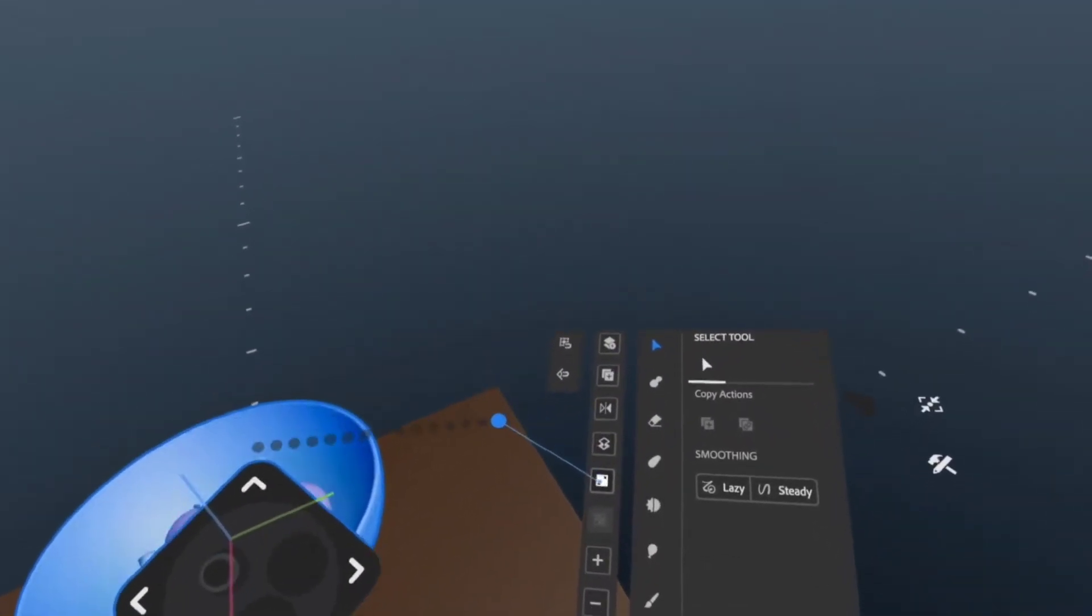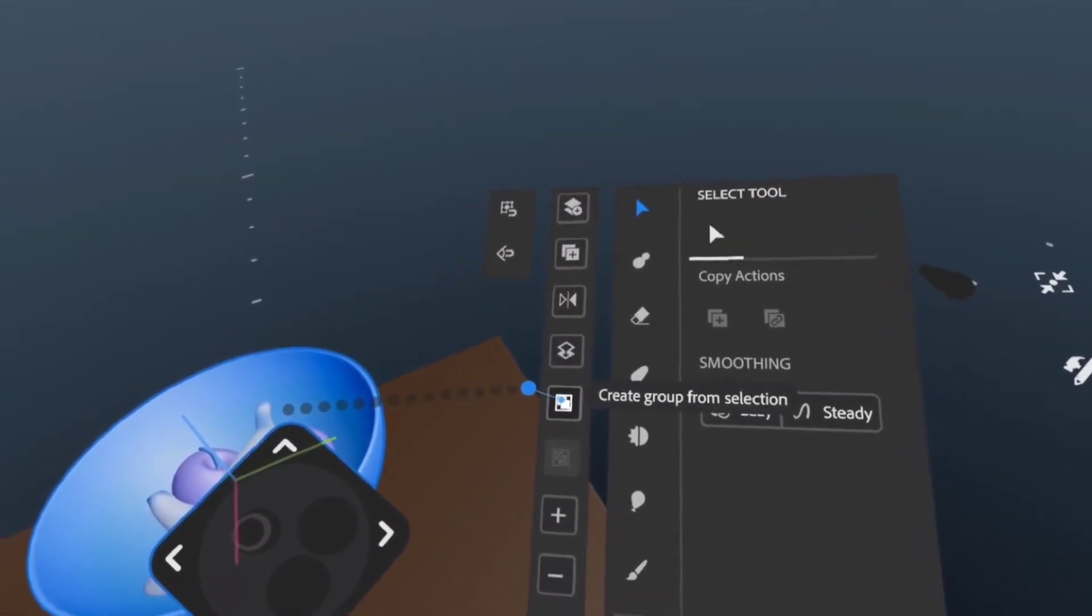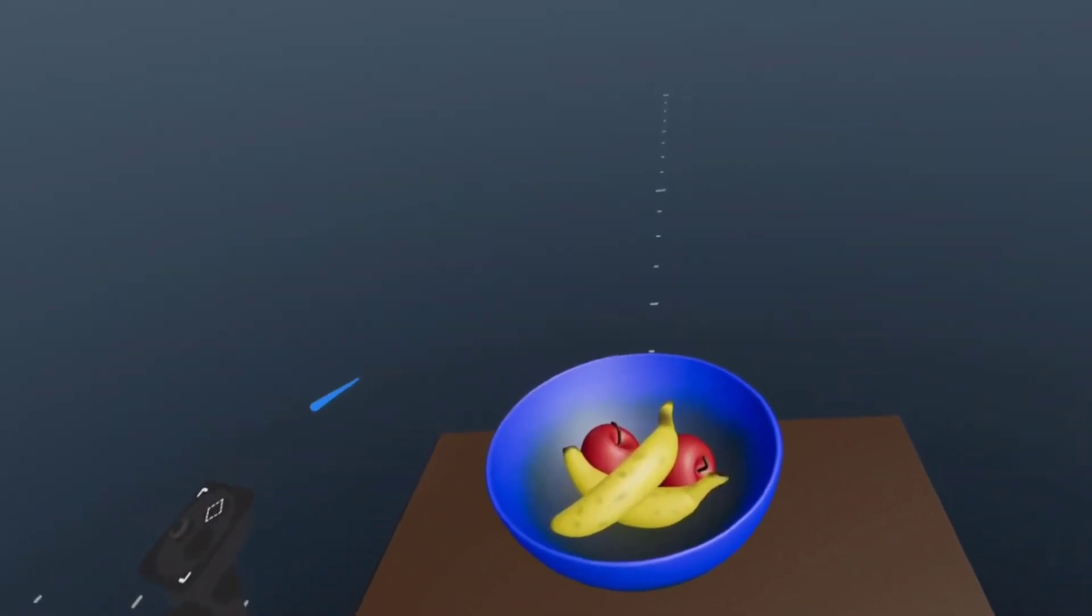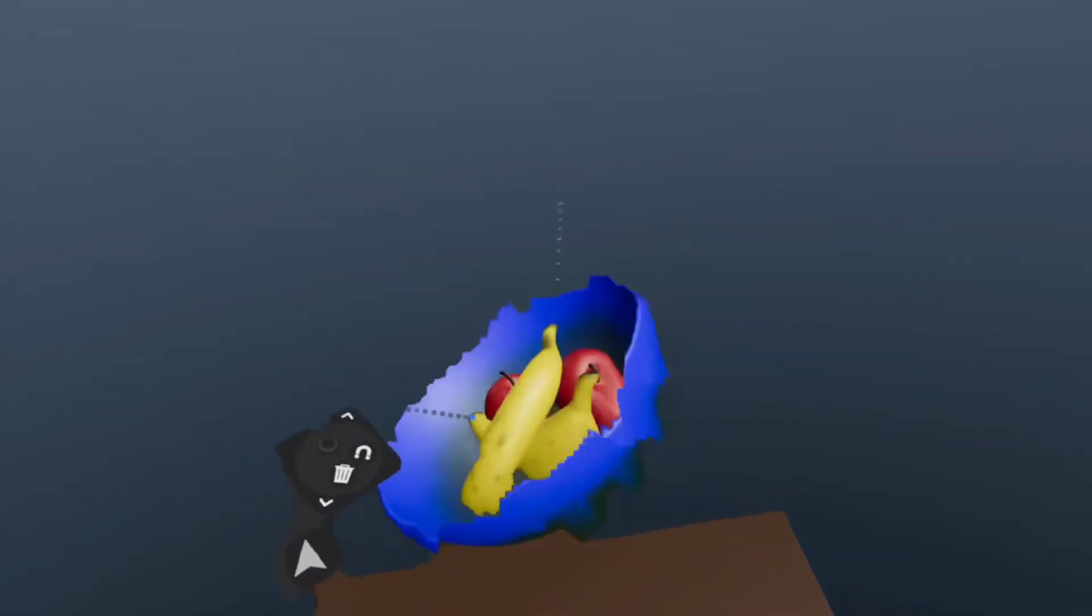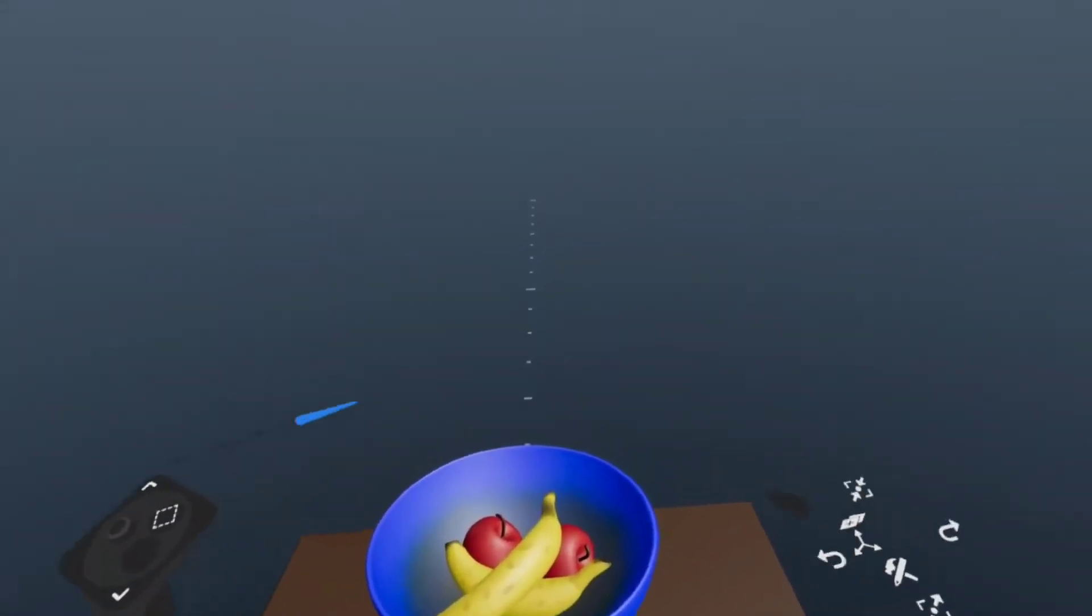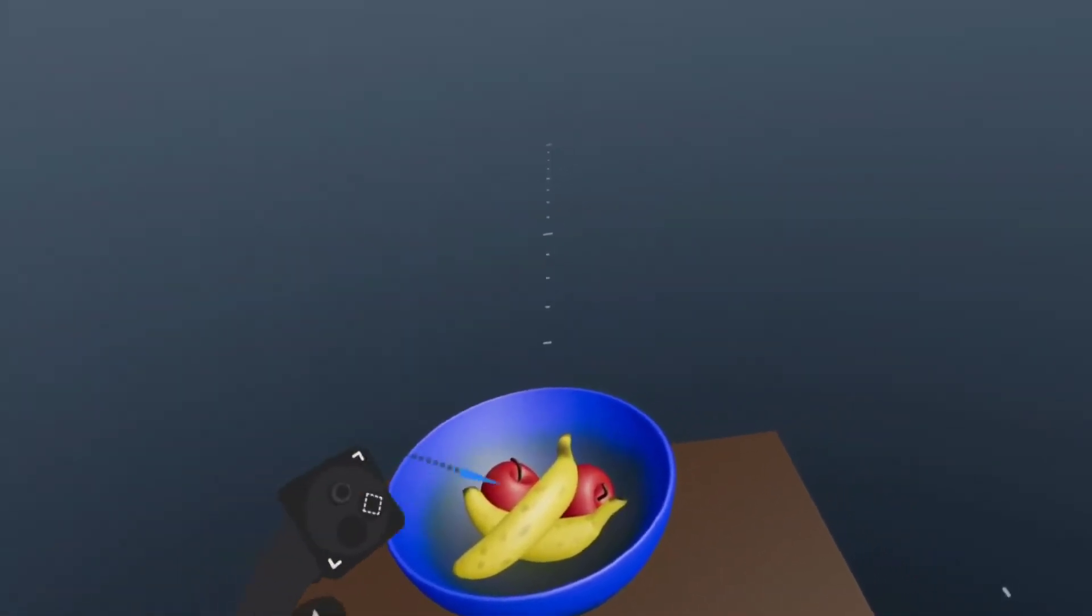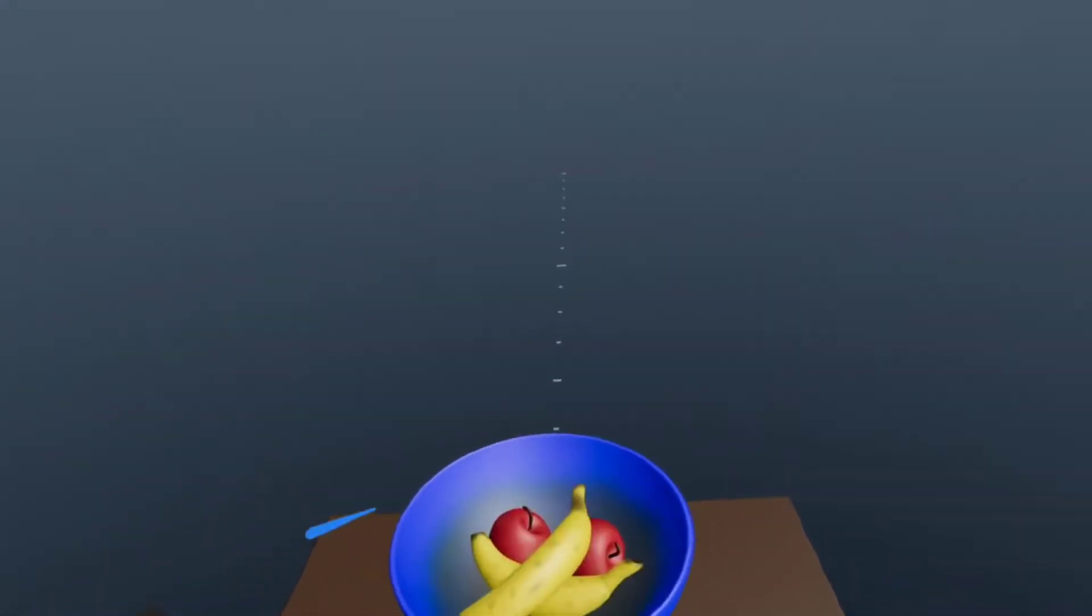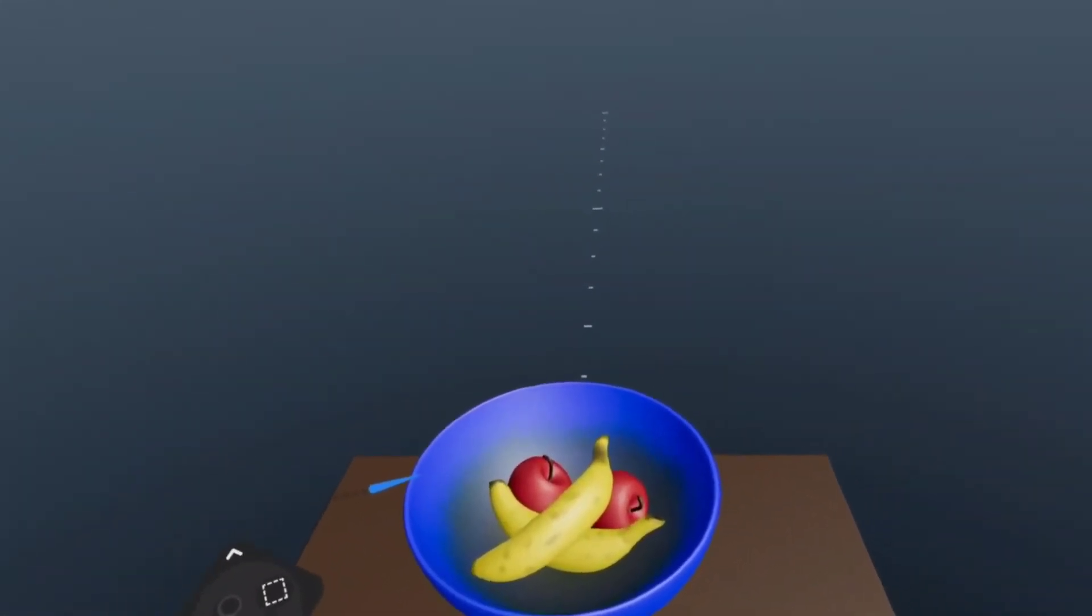And right here, you have the option to create a group. It's this button right there. So create group from selection. And now what you have is actually a group that works as one object. Now, what's the advantage of doing this rather than just using layers? So say you merged these into one layer, that would achieve a similar thing. But the problem is then you wouldn't be able to manipulate anything individually anymore.